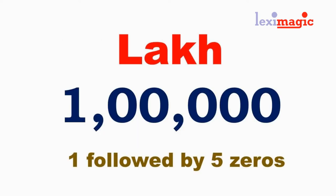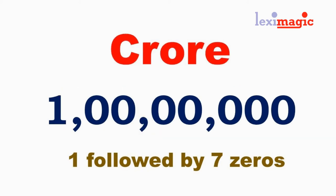In India and a few other Asian countries, there are a few other words used for large numbers. A lakh is a hundred thousand, or one followed by five zeros. A crore is ten million, or one followed by seven zeros.